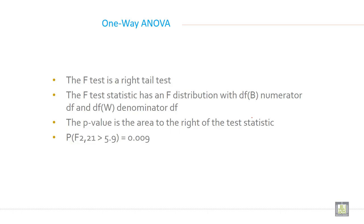So P(F2,21 > 5.9) equals 0.009. This is your p-value.